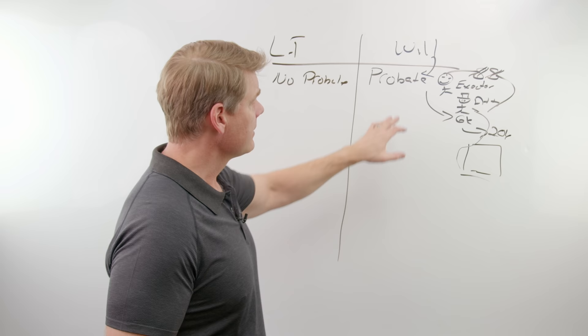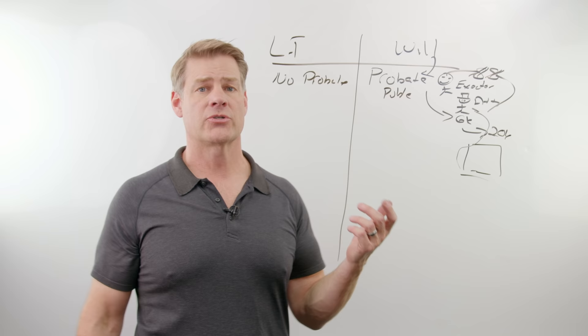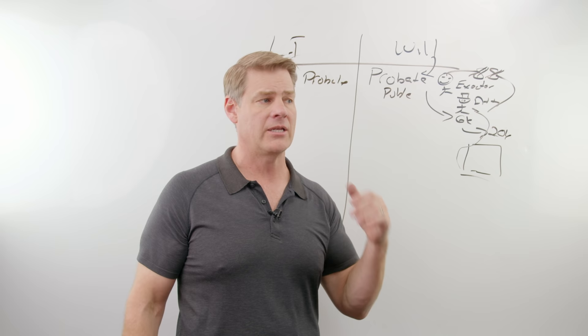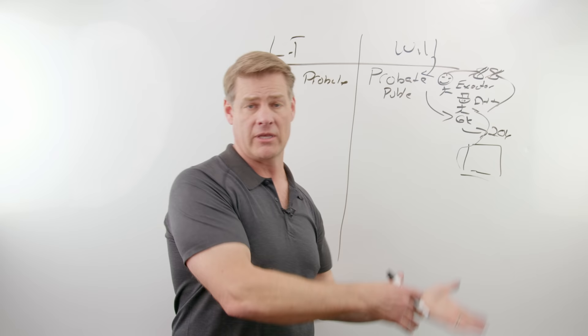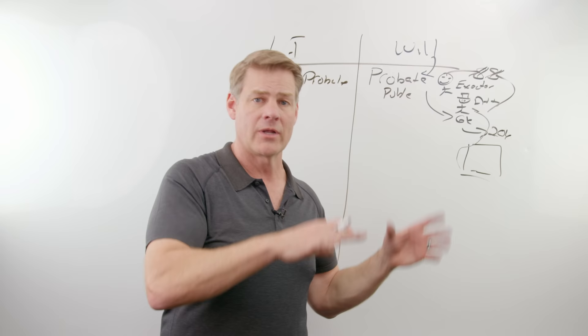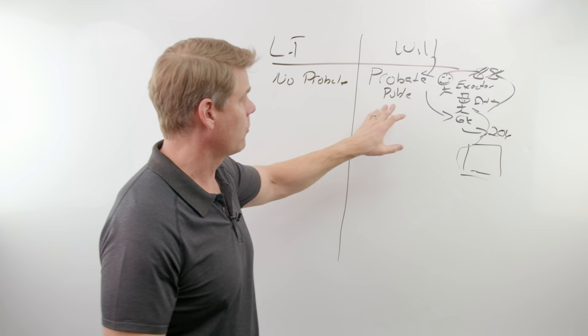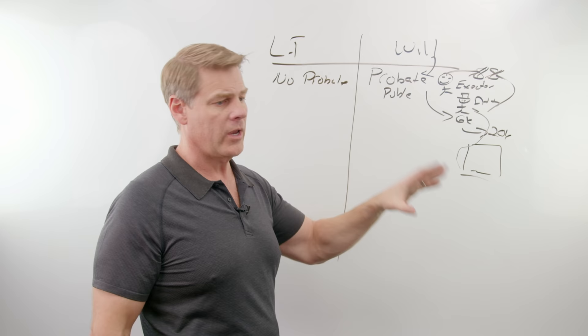Now, the other thing about probate is that it's a public record, all right? So you've probably seen real estate investors tell you, hey, you know, probate is a great way to buy property. What do they do? They monitor people that have passed away through the probate filings. They find out that the beneficiaries don't live in that state. Then they start making offers to buy the real estate to save them the time and hassle of having to deal with that remotely. So that's that probate strategy from an investor standpoint. Why is that? Because it's a public record. So your will, what you own, all that's available to the public when you pass away, when you go through the probate process.